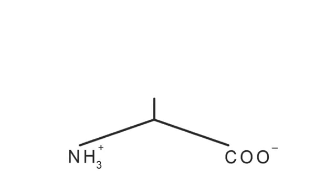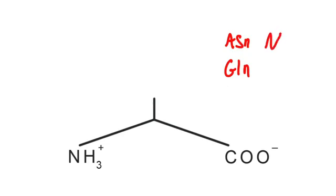Next up are asparagine and glutamine, the two amino acids that have carboxamides in their side chains. The way I like to think about these is to first write down their three-letter and one-letter codes. Asparagine's single letter is N, and glutamine is Q — that one you're just going to have to memorize. It doesn't work into the structure, but you'll need to know it.